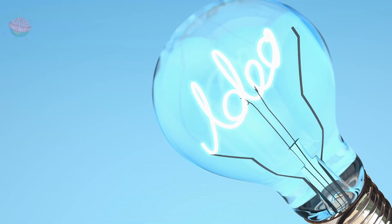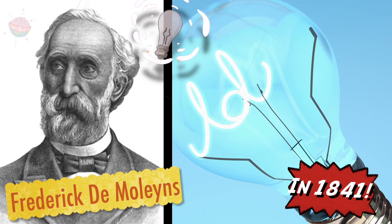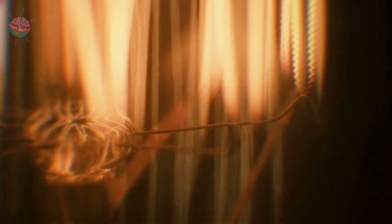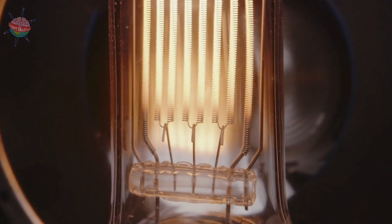However, a British inventor named Frederic de Molines invented the glass bulb. Air was pumped out of the bulb to create a vacuum. With no oxygen to fuel a fire, the filament glowed hot, but didn't burn.